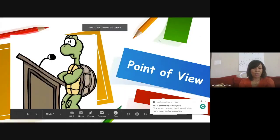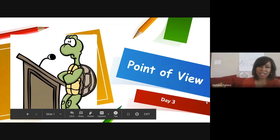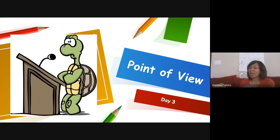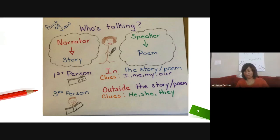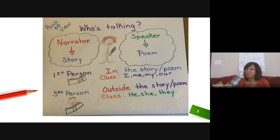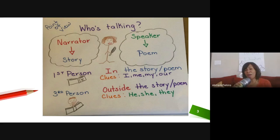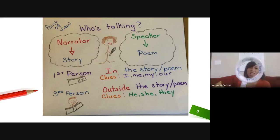Our whole big concept is point of view and thinking about who's talking. And not only thinking about who's talking, but thinking about who are they talking about? So we're going to do a quick review. Who's talking? That's where we started this journey. The big umbrella: point of view, who's talking? Is it the narrator in a story or a speaker in a poem? First person point of view or third person point of view? In first person point of view, the character or a character in a text is very self-centered — it's all about them — and those pronoun clue words help us determine that.